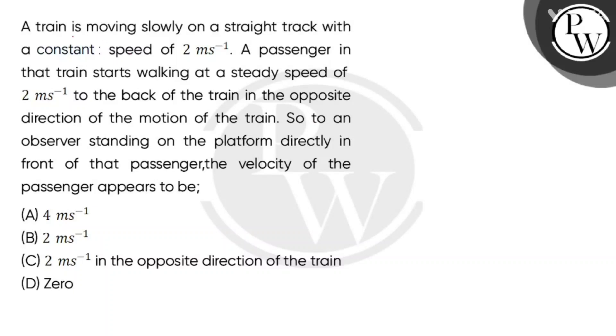Hello, let's read the question. A train is moving slowly on a straight track with a constant speed of 2 meters per second. A passenger in that train starts walking at a steady speed of 2 meters per second to the back of the train in the opposite direction of the motion of the train. So to an observer standing on the platform directly in front of that passenger, the velocity of the passenger appears to be.